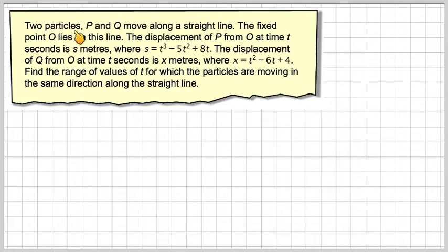The question says two particles P and Q move along a straight line. The fixed point O lies on this line. The displacement of P from O at time t is s meters, where s equals t cubed minus 5t squared plus 8t.